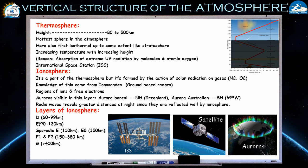The next layer is the thermosphere. 'Thermo' relates to heat, so this is the hottest layer in the atmosphere — the reverse of the mesosphere which was coldest. The height of the thermosphere is 80 to 500 kilometers. Similar to the stratosphere, the temperature profile first follows an isothermal trend up to some extent, and then starts increasing with increasing height.